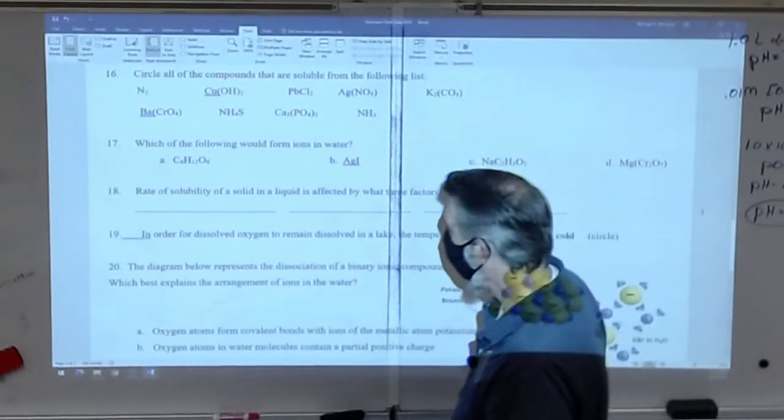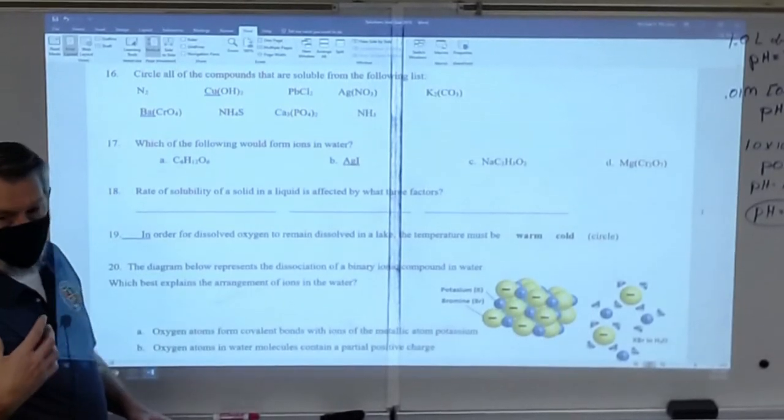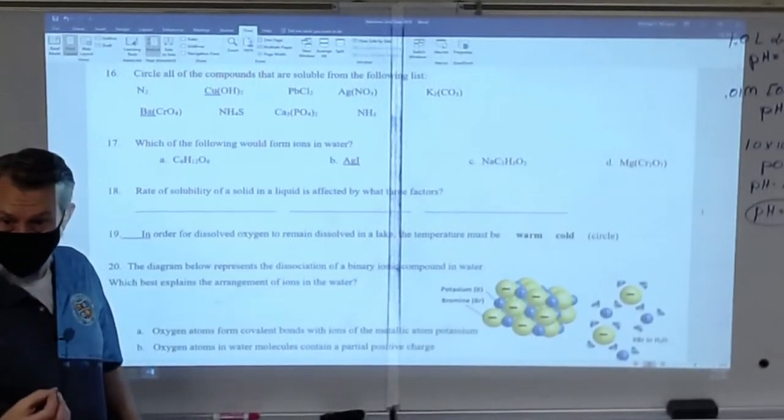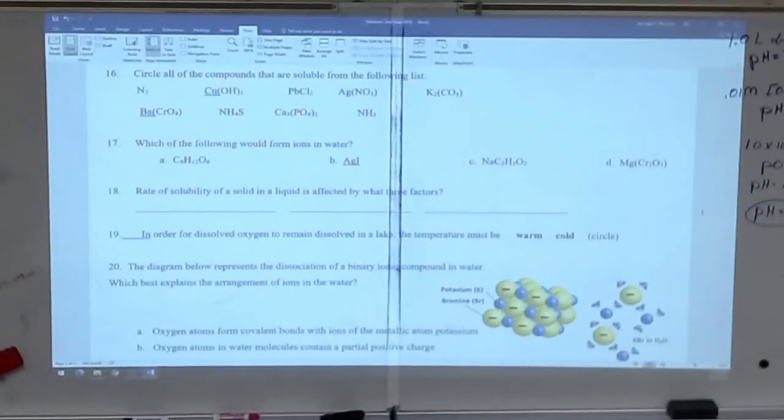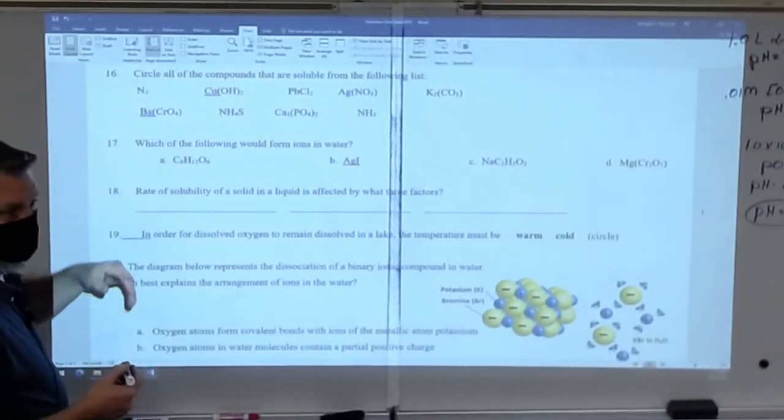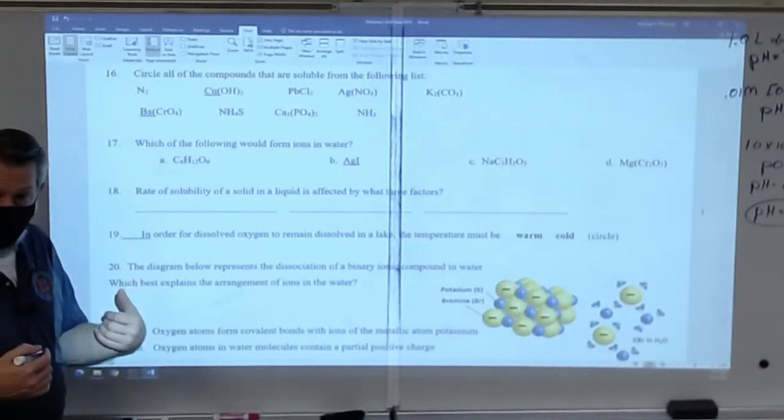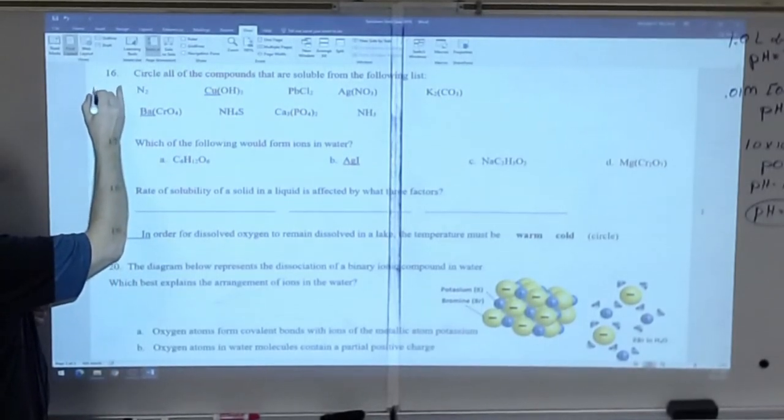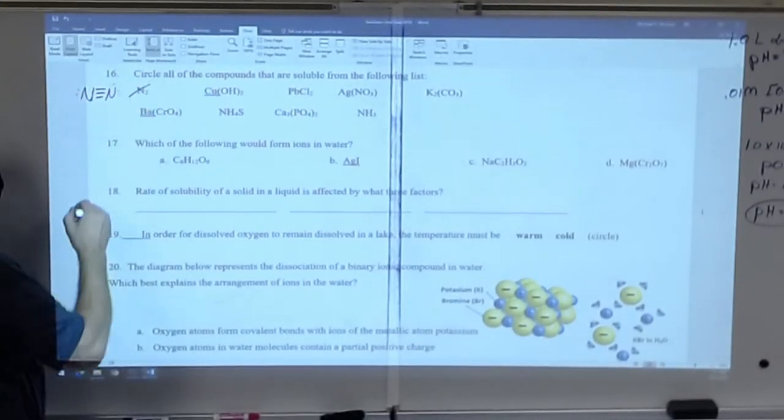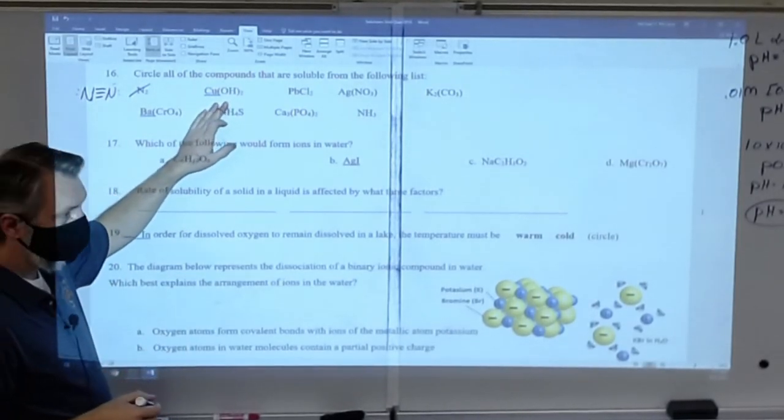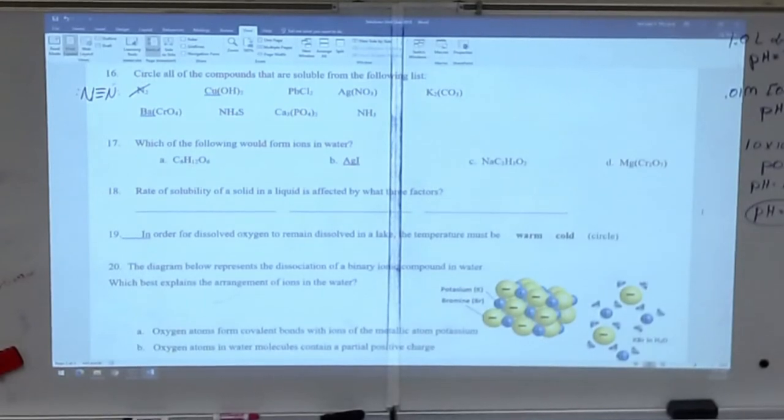Let's circle the compounds that are soluble from the following list. The first thing I want to ask is are these covalent or ionic? If they're covalent, what am I looking for? I'm looking for whether or not they're polar. So is nitrogen polar? Well, first of all, is it covalent or ionic? Nitrogen is covalent. If I were to draw the Lewis dot structure, nitrogen is nonpolar. Copper hydroxide.